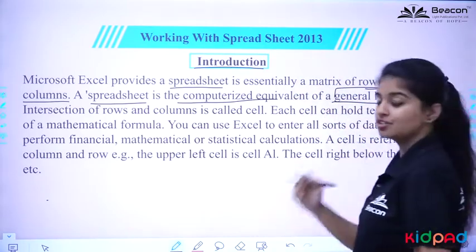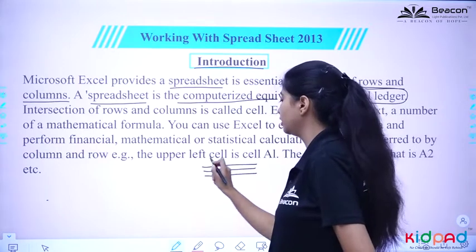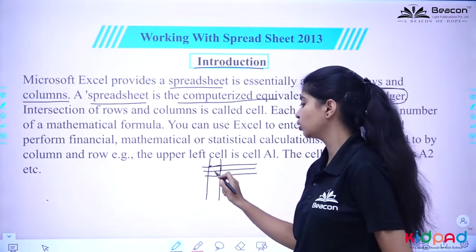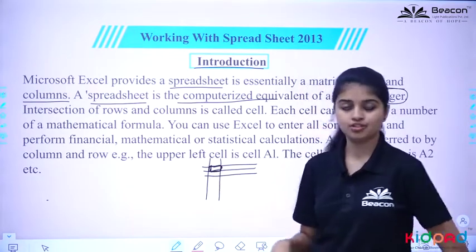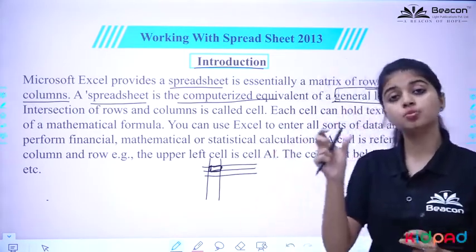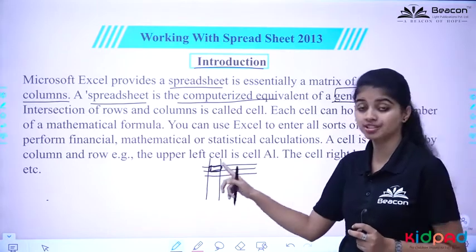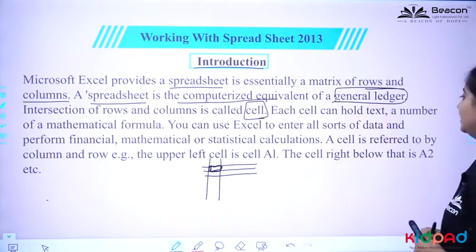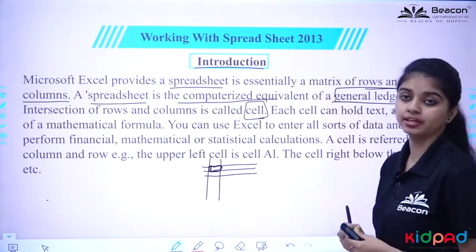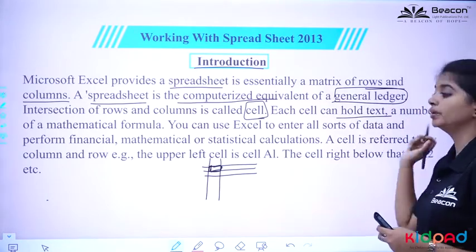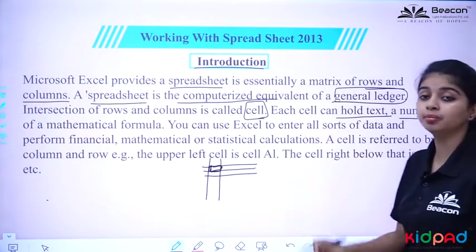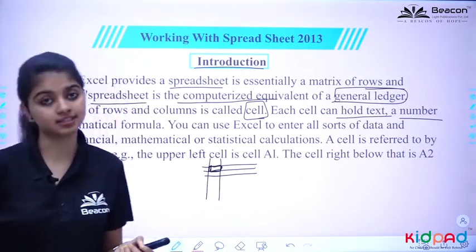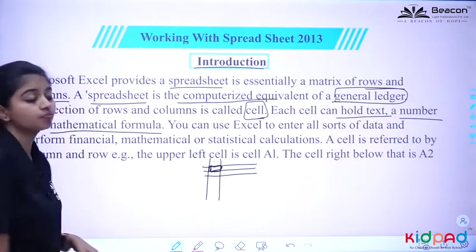The intersection of rows and columns is called a cell. Where rows and columns intersect, we get a small block called a cell. In every cell we can store text, any number, or we can provide and use a mathematical formula in the calculation part.